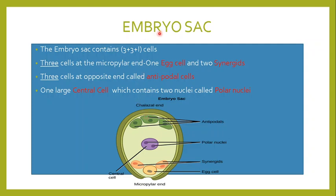This embryo sac basically contains three plus three plus one cells. Three cells are at the micropylar end. The central one is known as the egg cell, and the other two adjoining cells are known as the synergids. So the egg cell and the two synergids are at the micropylar end.